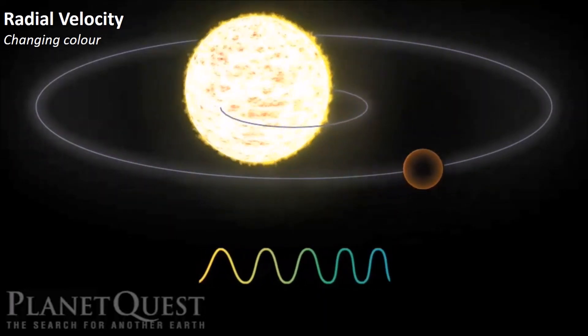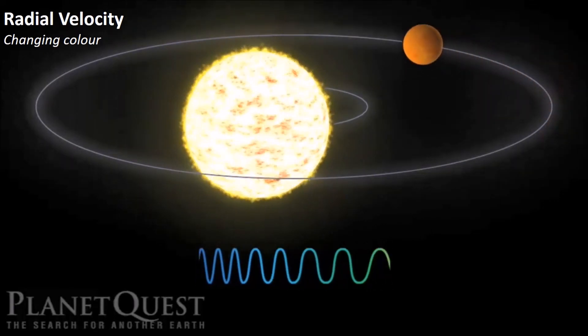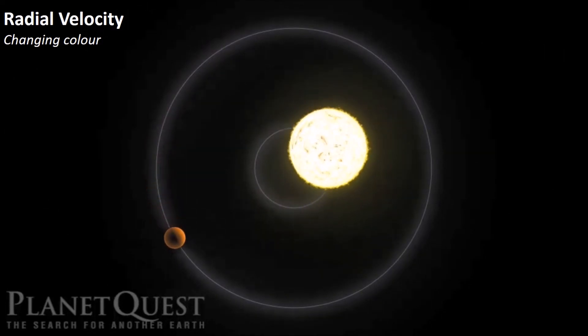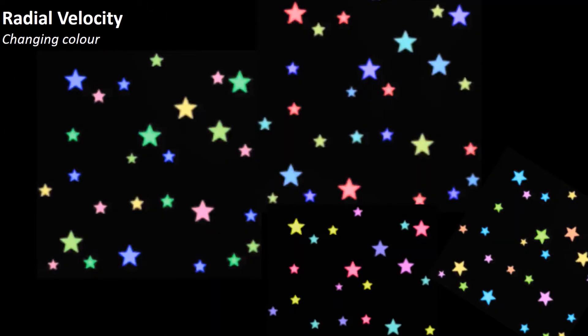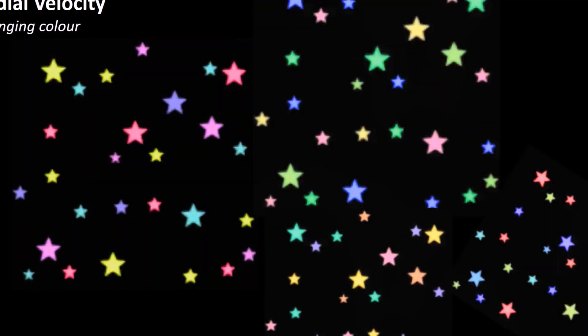It will become bluer as the star is moving towards you, and redder as it moves away from you. So if astronomers find a periodic change in the colour of its distant star, it means it is moving around, and by extension, that there is a planet there, causing it to move.